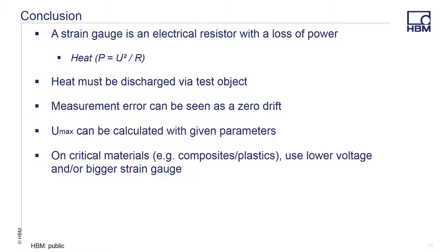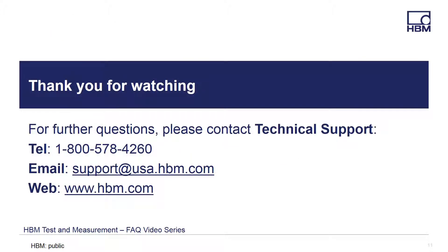To conclude, we discussed the fact that a strain gauge is an electrical resistor with a loss of power, and the heat generated must be discharged in some manner. Excessive heat can cause measurement errors seen as zero drift. The maximum excitation voltage applied can be calculated using certain known parameters. When using certain materials such as composites or plastics, you should either use a lower excitation voltage or choose a larger strain gauge. If you have any questions, please feel free to call, email, or visit our website for the latest products, solutions, and downloads at www.hbm.com. Thank you.